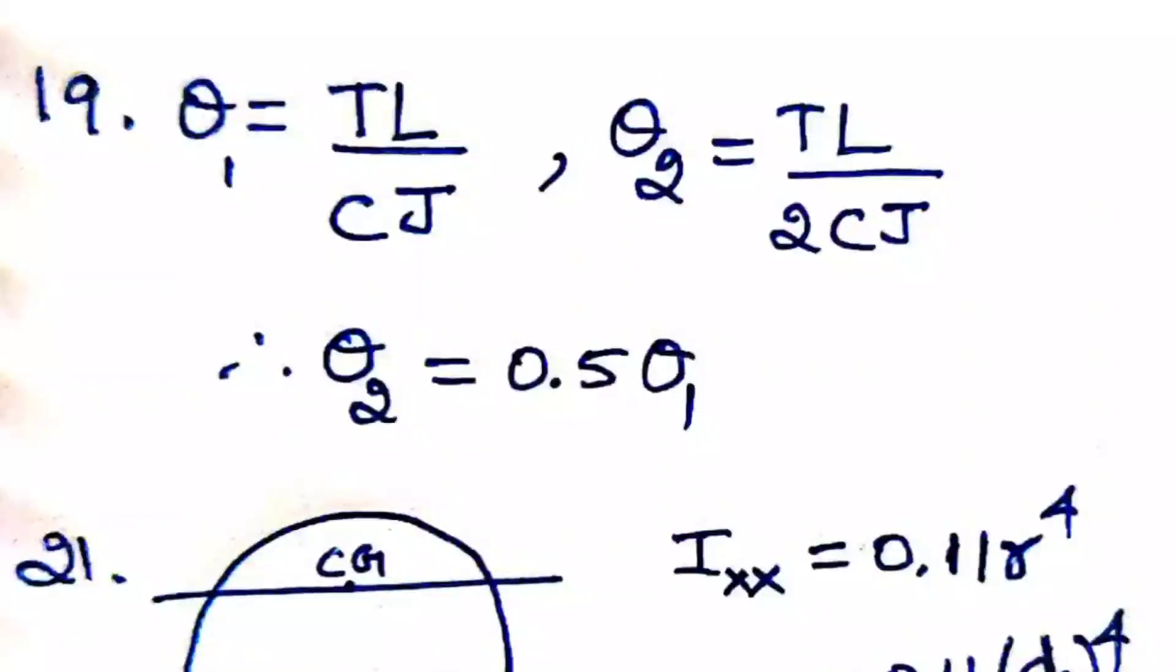we can write it as T(L/2)/(CJ) because the length is L/2. So if θ₁, the angular twist for the first segment, is θ, then θ₂ will obviously be half of that only. So it will be 0.5θ₁. The answer is 0.5θ.